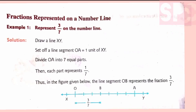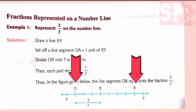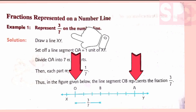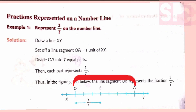Suppose we have to represent 3 by 7 on the number line. First we will draw a line and name it as XY. On this number line, we will mark 2 points - one as O and the other as A. Now since the denominator of this fraction is 7, we will ensure that the length of OA is 7 units, so that we can easily divide OA into 7 equal parts.